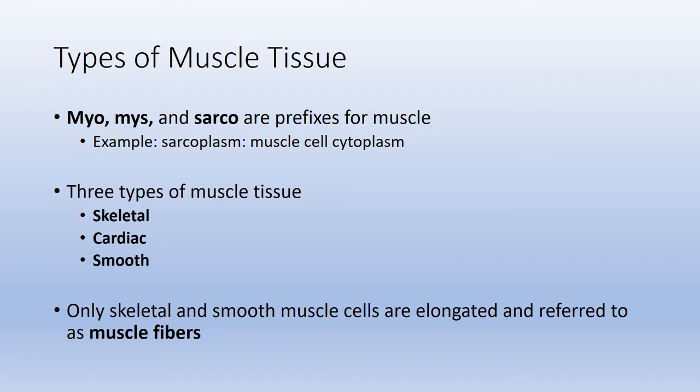We have three types of muscle tissue, and for now you simply need to know where all three are located: skeletal, cardiac, and smooth. Throughout this chapter, you will hear me refer to a muscle fiber — that term simply means muscle cell. Skeletal and smooth muscle cells are longer and resemble a fiber, so we call them muscle fibers.